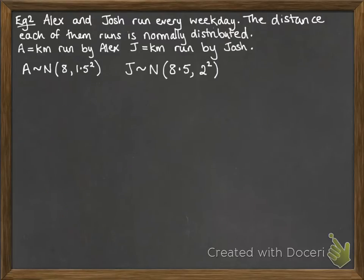We have this next example. Usually you would be given this all in words. I'm trying to shorten the notation so we can just get on with working it out. We have Alex and Josh running every weekday. We're measuring their distance in kilometers. I'm using A to represent Alex and J to represent Josh and how far they've run. Alex runs a distance that is normally distributed with a mean of 8 and a standard deviation of 1.5. Josh runs with a mean distance of 8.5 and a standard deviation of 2.